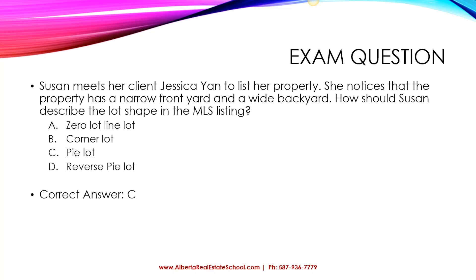A reverse pi lot, on the other hand, is the opposite — it's broader or wider in the front and narrow in the back. A zero lot line lot is where the house is built on one side of the property. The lot is narrow, but the house itself is on one side, so there is more room to the other side of the property.